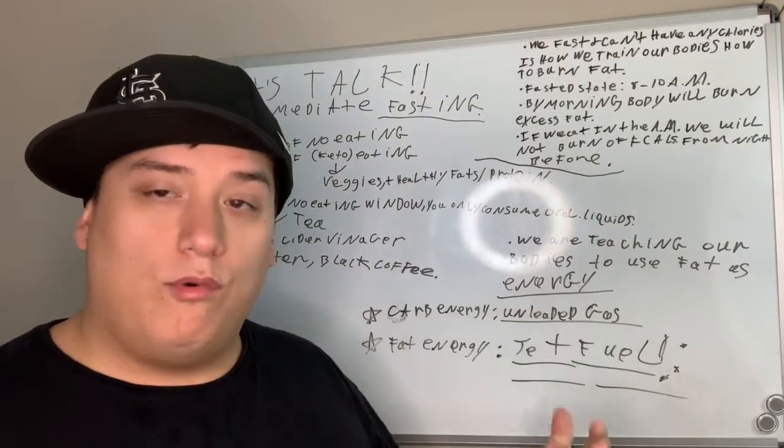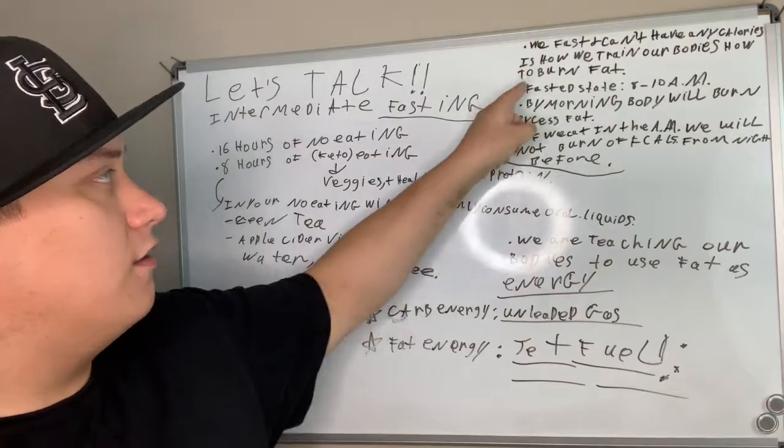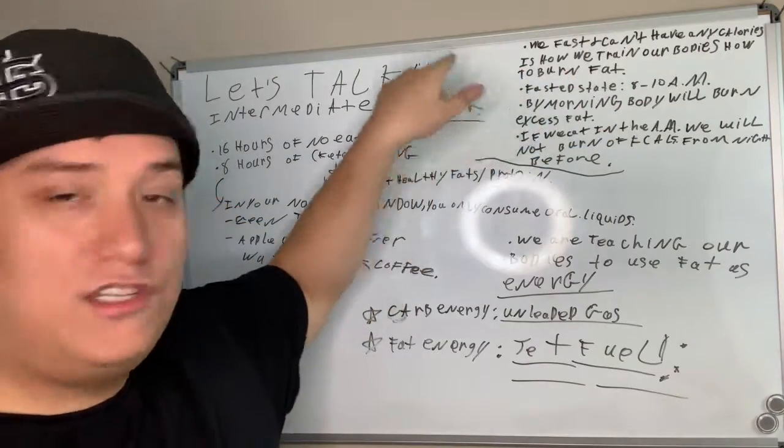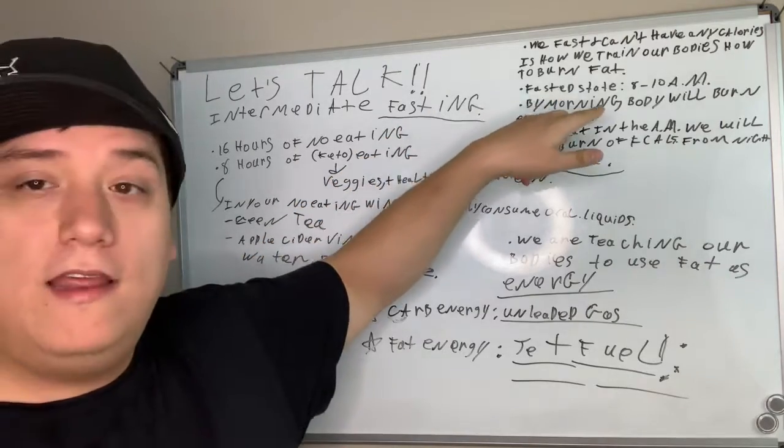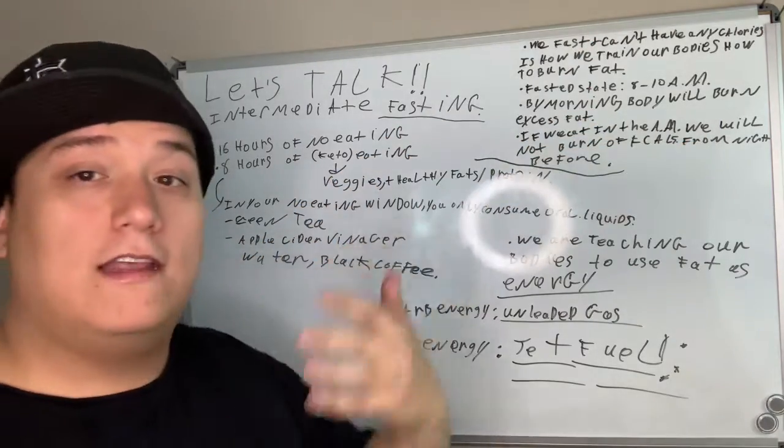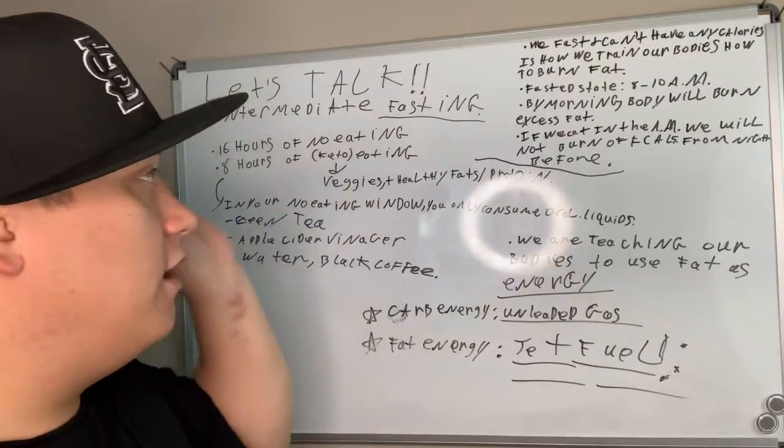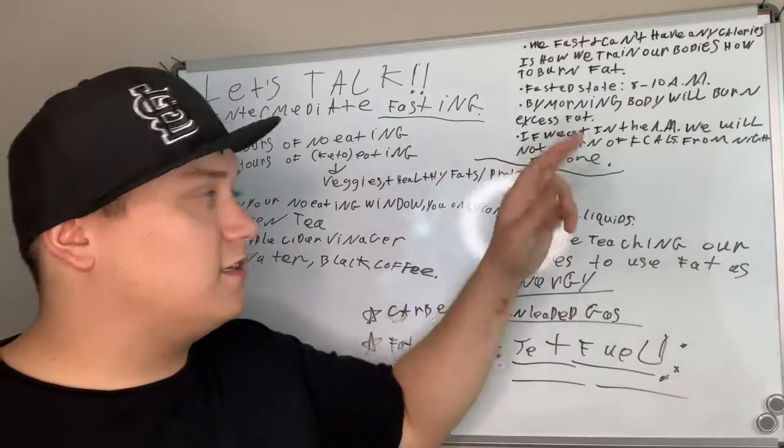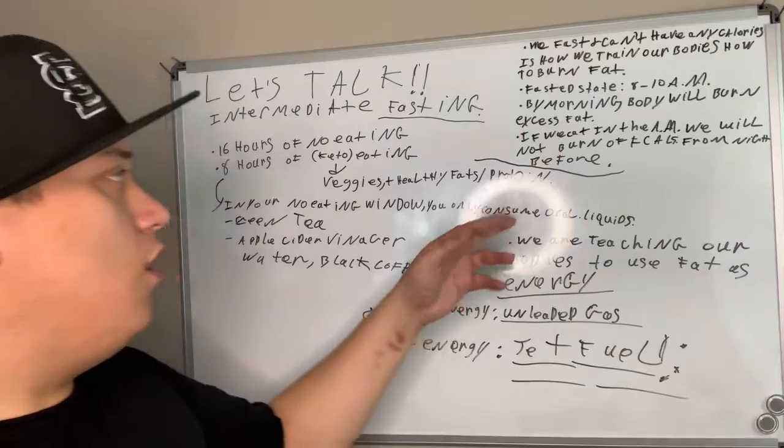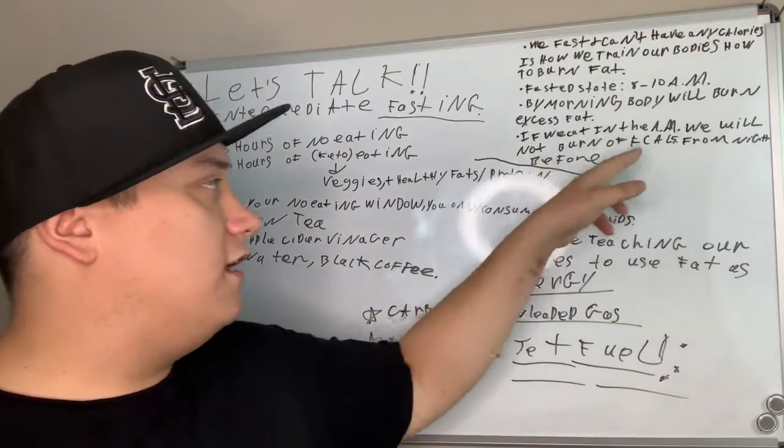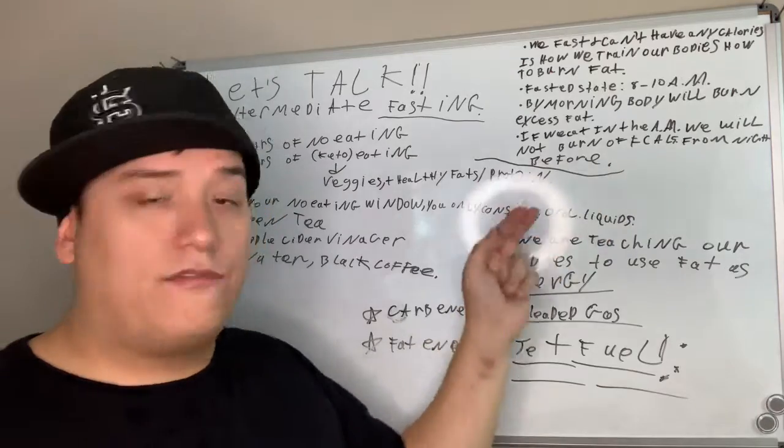And then within your 8-hour window, we can't have any calories. That way, we train our bodies to burn fat. And so our fastest state is from 8 a.m. to 10 a.m. And then I don't eat until 1 o'clock in the afternoon. So then by morning, my body will burn the excess fat from the night before because I didn't have breakfast. If we don't eat, but if we do eat in the a.m., our body will not burn the excess fat from the night before.